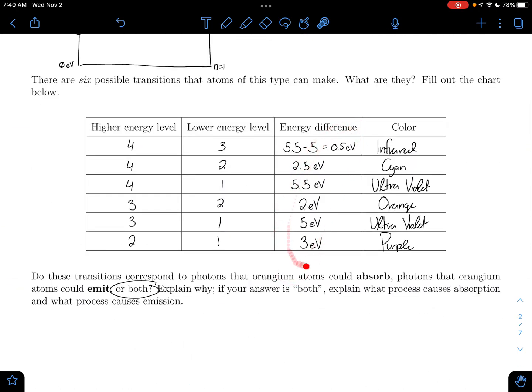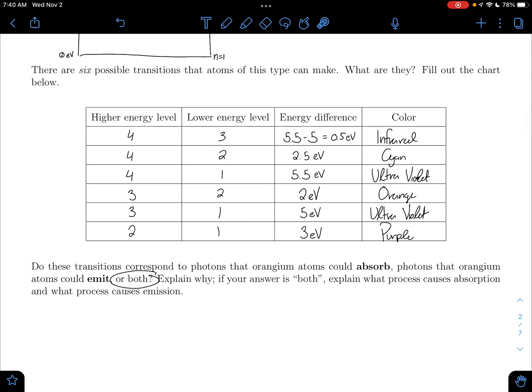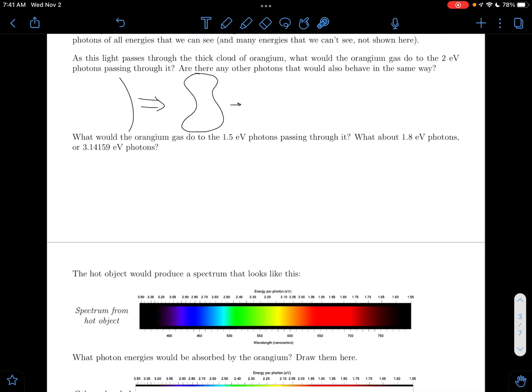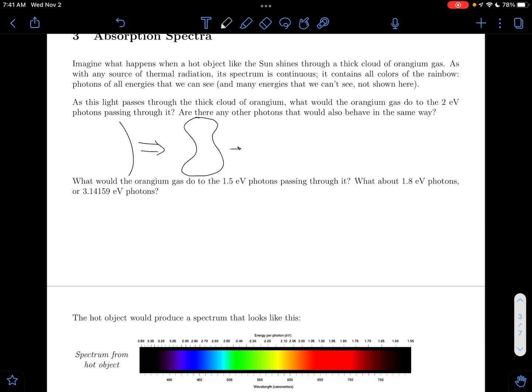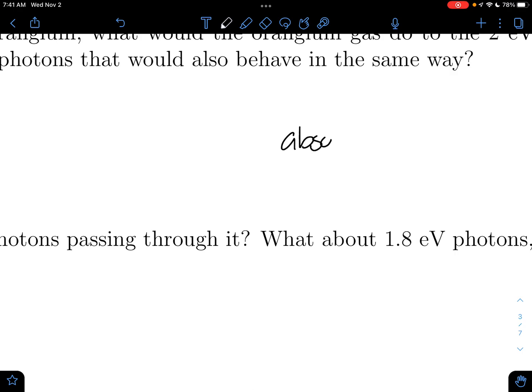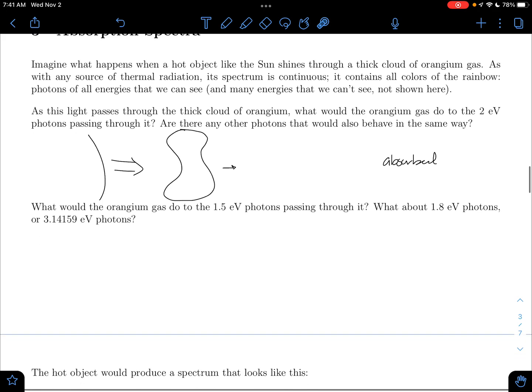So they would absorb those 2 eV photons because that's one of the jumps that we can make between floors. And any other photons that would behave the same way, all of these energy differences that we have here, the only ones we'd see being absorbed would be the ones in the visible spectrum, 2.5, 2, and 3. But the other ones would still exist and still be absorbed as well. So our answer to this is it would be absorbed and also all the other energy differences.